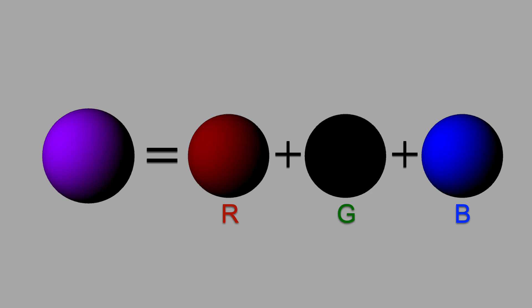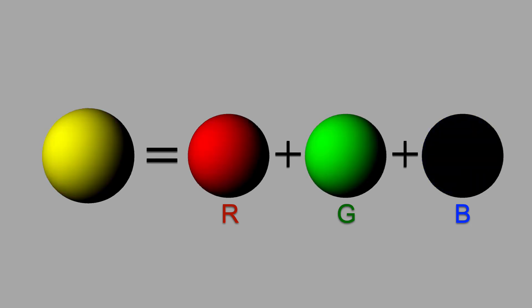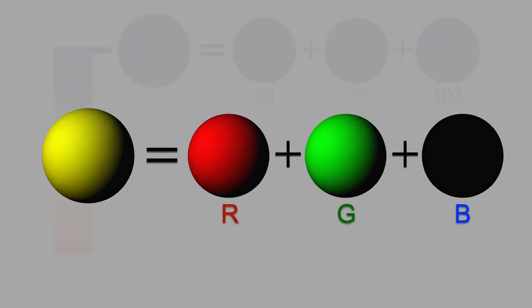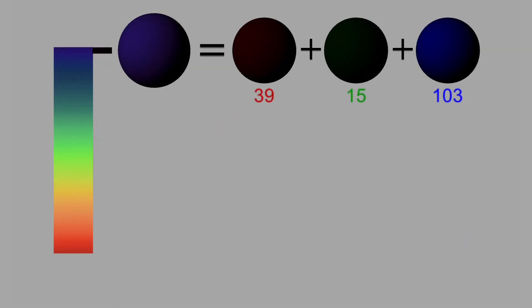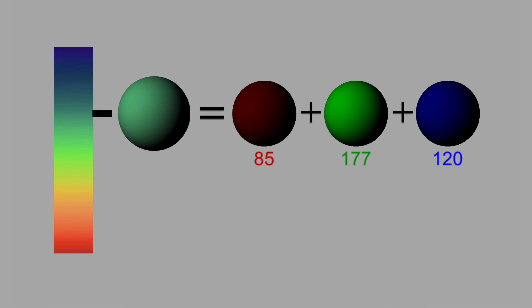If we just add red and blue, we get purple, and red plus green produces yellow. In fact, we can produce any color by different combinations of these three primaries.